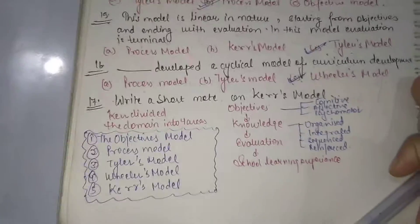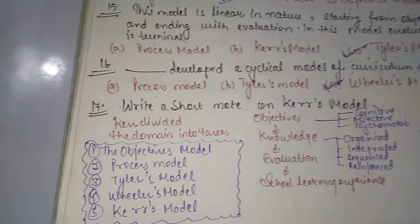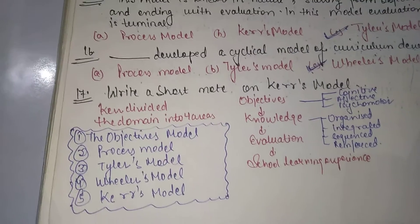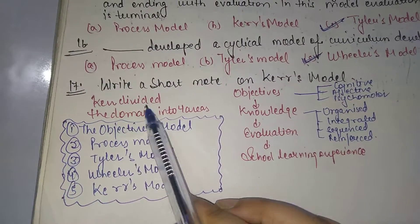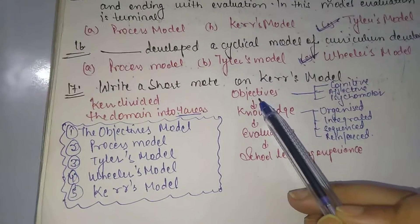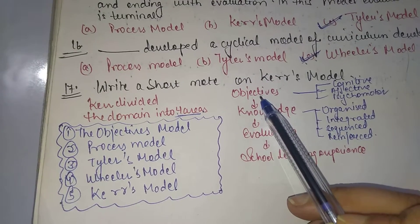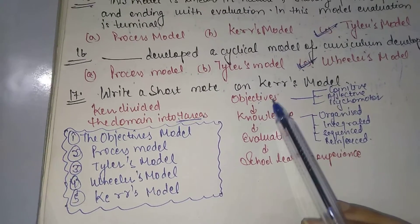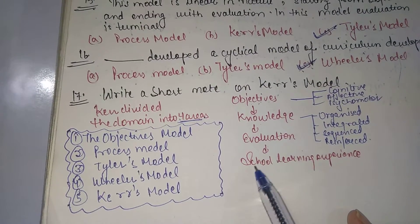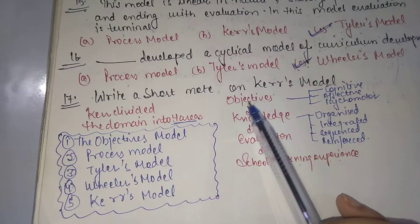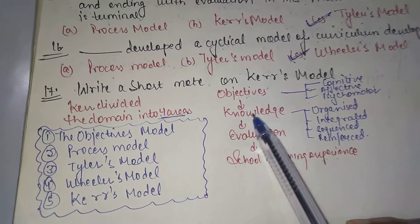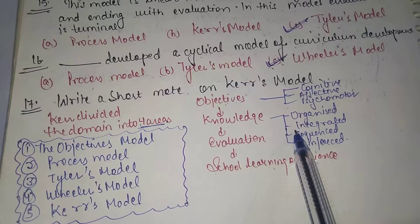This is not your MCQ but I have written a short note: Kerr's model. Kerr's model divided the domain into four areas. First was objectives, second would be knowledge, third would be evaluation, and the last one would be school learning experiences. In objectives there are further three classifications: cognitive, affective and psychomotor. And knowledge within your knowledge: organized, integrated, sequenced and reinforced.